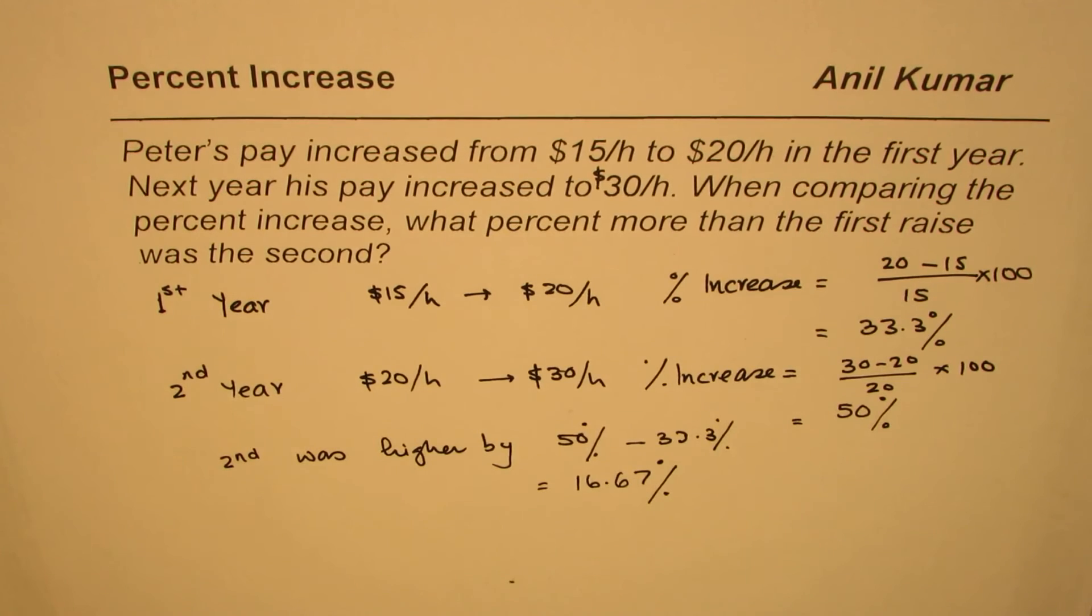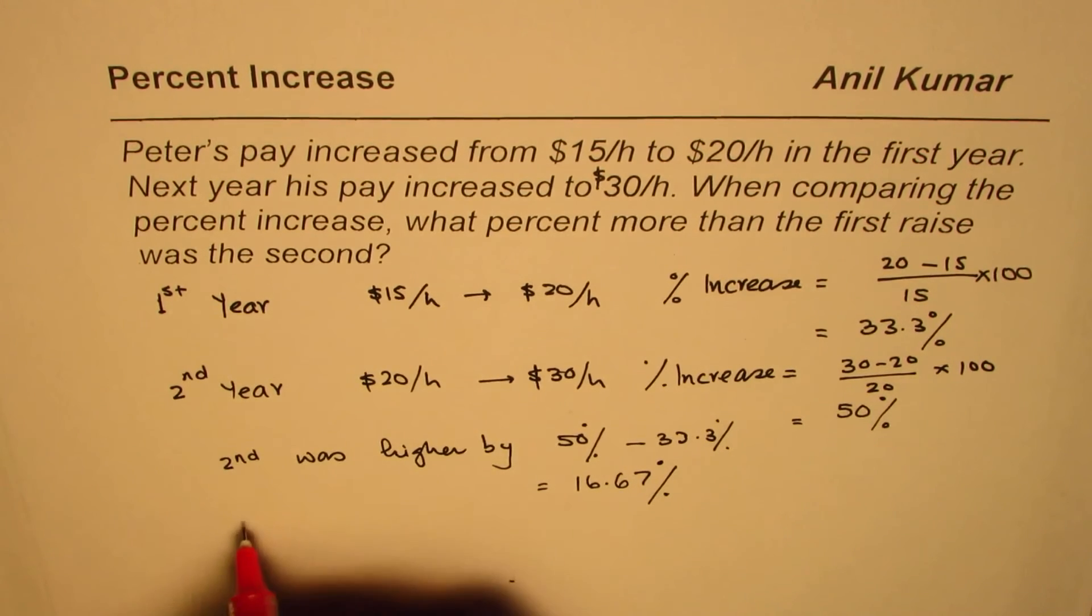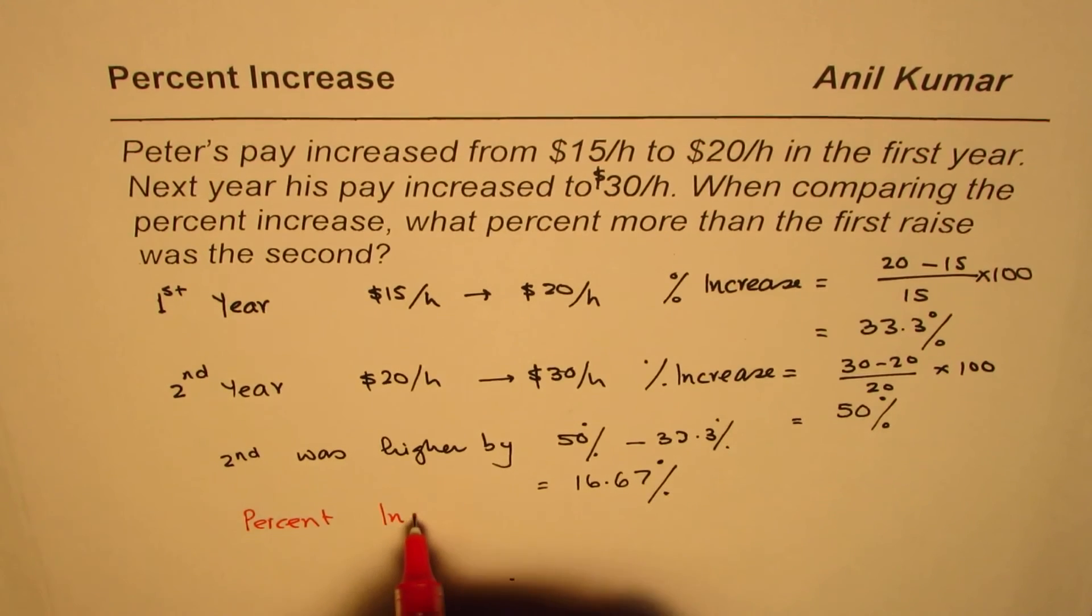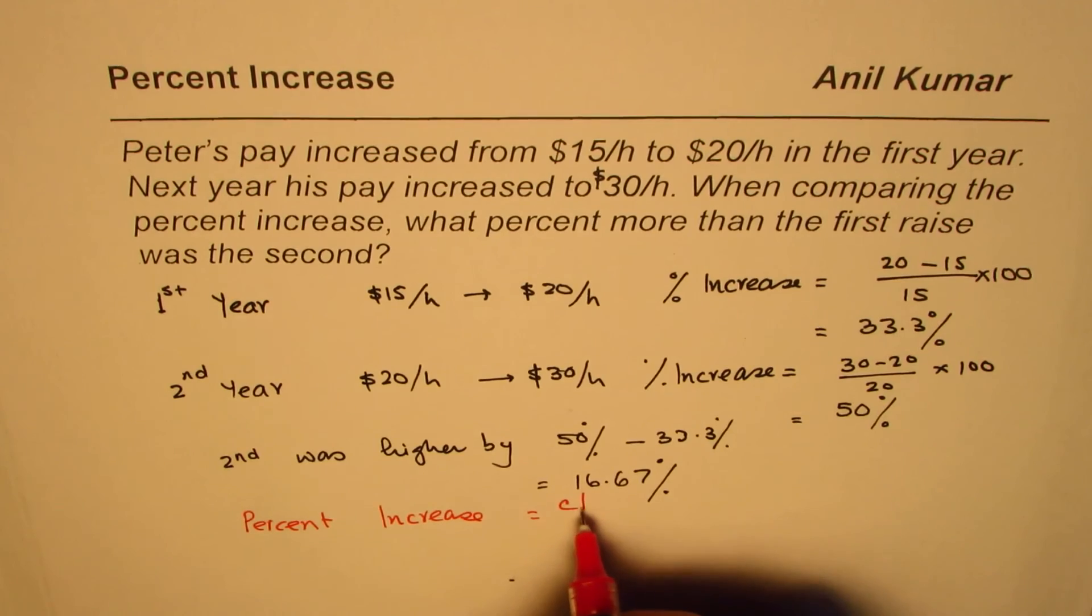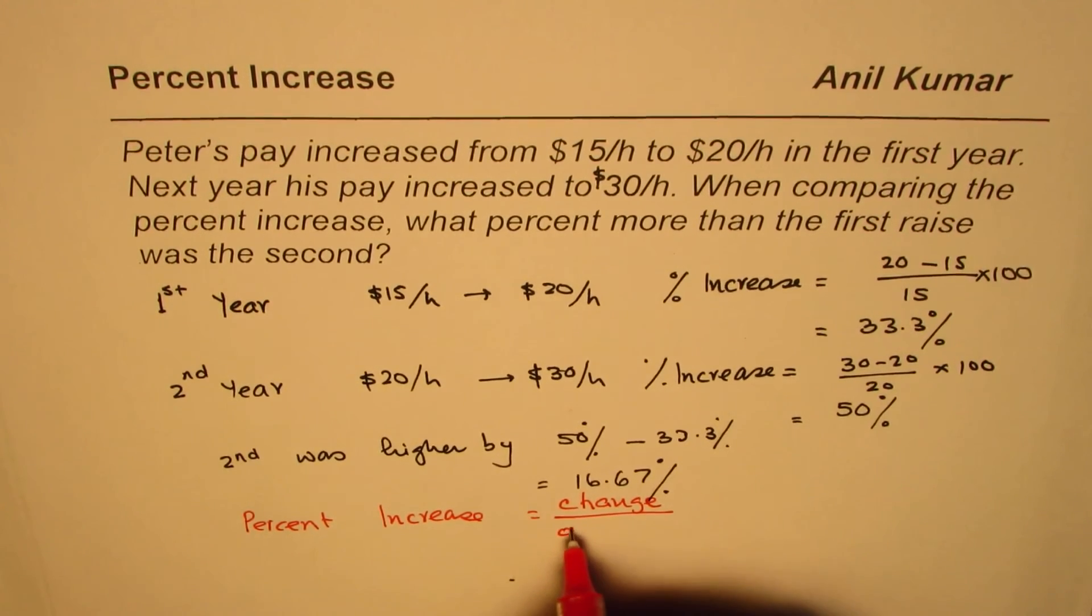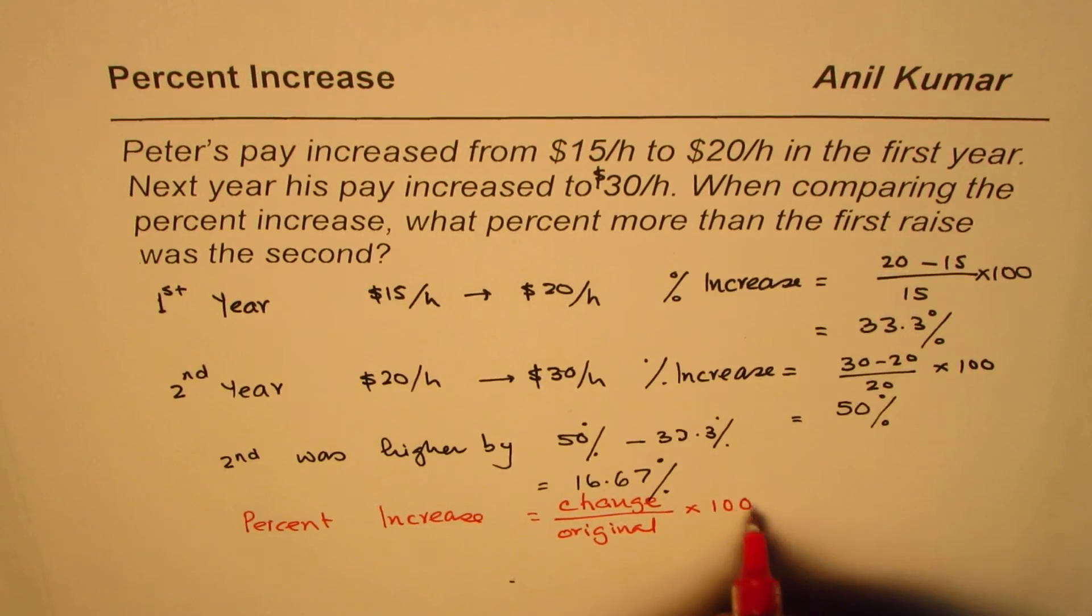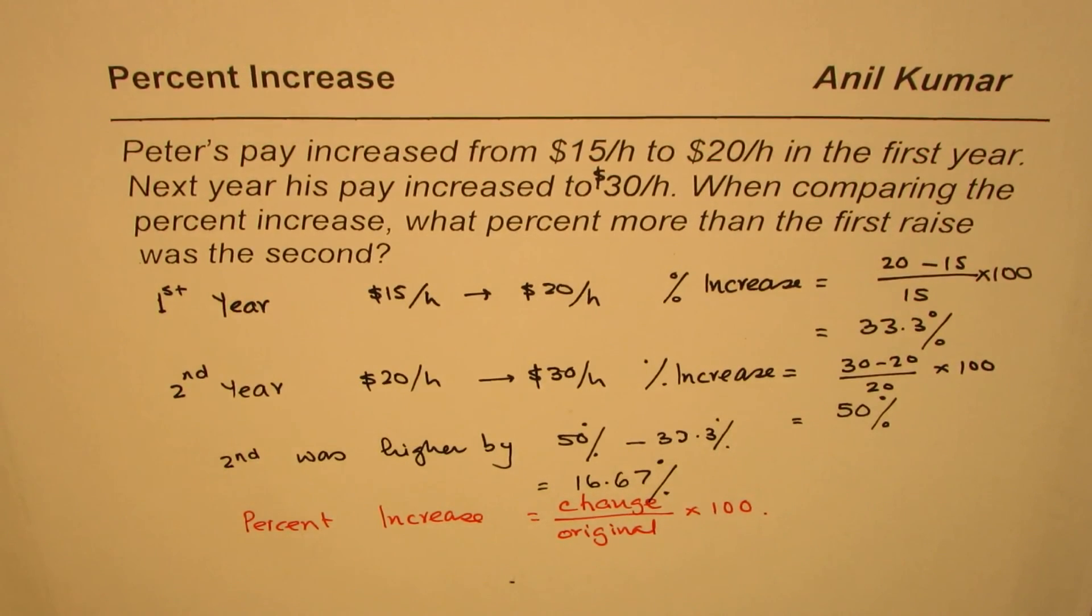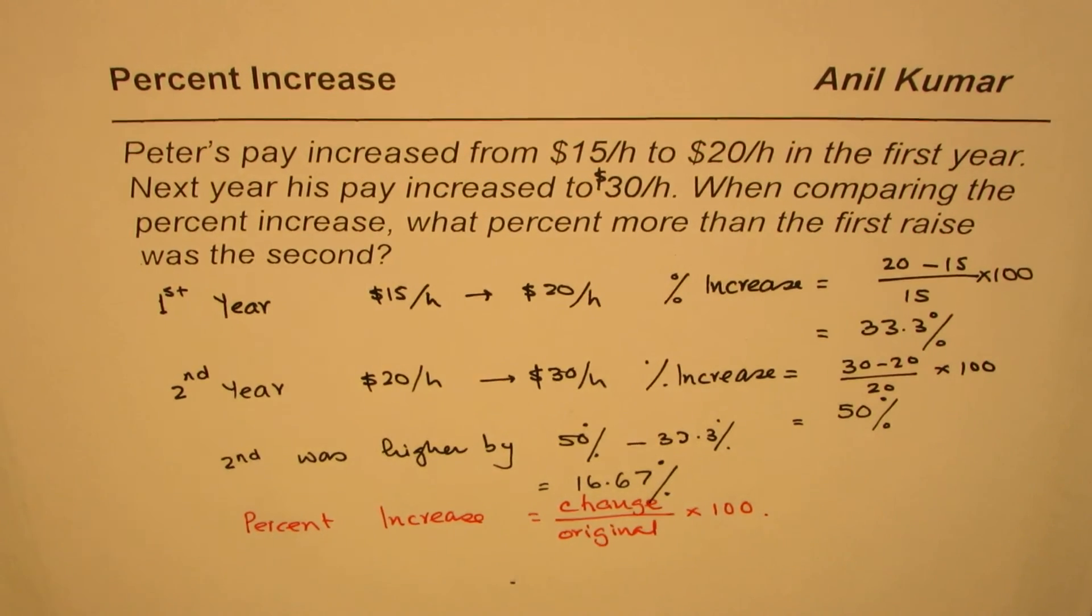The formula here which we have used for percent increase is: percent increase equals change over original times 100. That is how you need to find percent increase. I hope that helps, thank you and all the best.